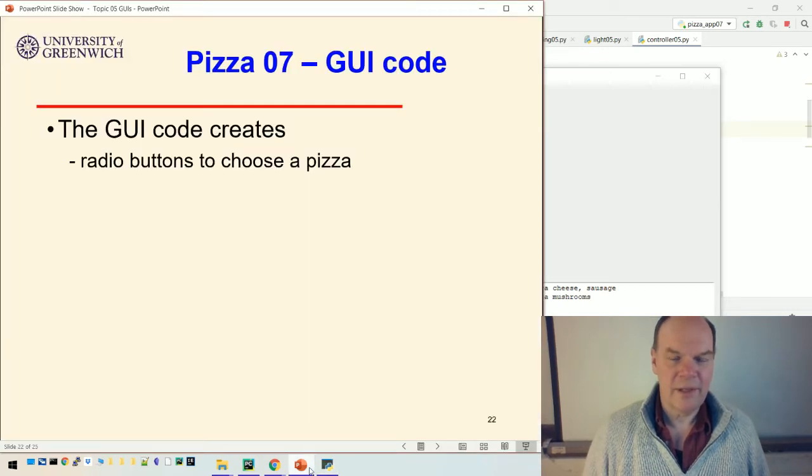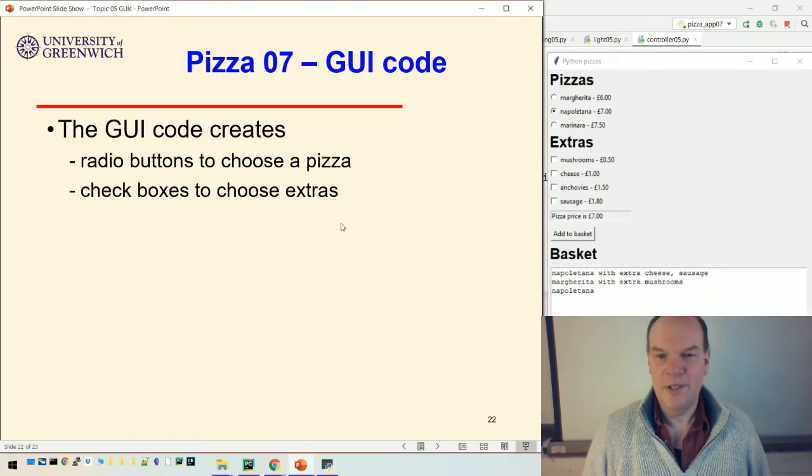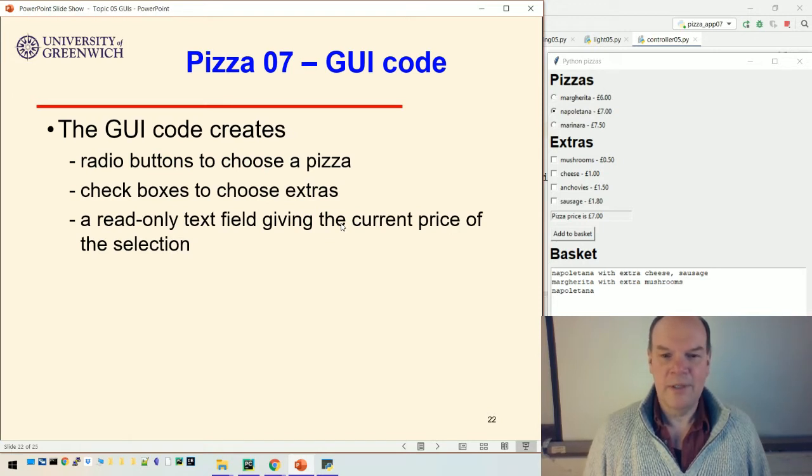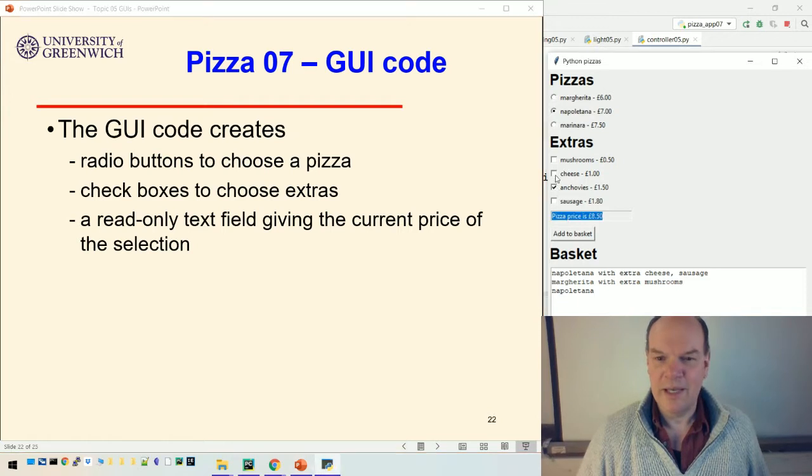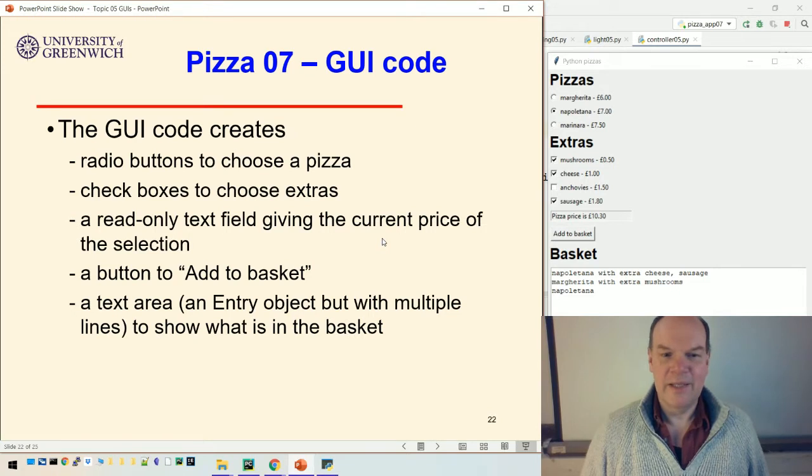Okay, so let's have a look at the code. What are we going to need? We're going to need radio buttons for the different types of pizza, check boxes to choose the extras. We've got a read-only text field, this one here, giving the price of the pizza. The current, sorry, the price of the current selection. So that obviously updates as the user selects things. It's read-only, so you can't type in your own price. We've got a button to add to basket and then a text area.